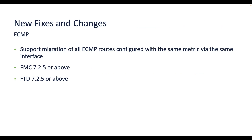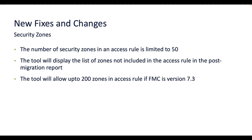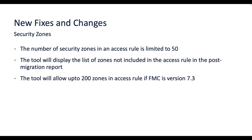Let's take a look at some of the additional fixes that are part of the new version of the tool. With FMC version 7.2.725 and above, all ECMP static routes configured with the same metric and via the same interface can now be migrated from ASA to FTD, as opposed to only one route in previous versions. In the latest version, if there are more than 50 security zones associated with an access rule, the migration report now mentions the zones that have been ignored in the access rules for reference when the user adds them manually.